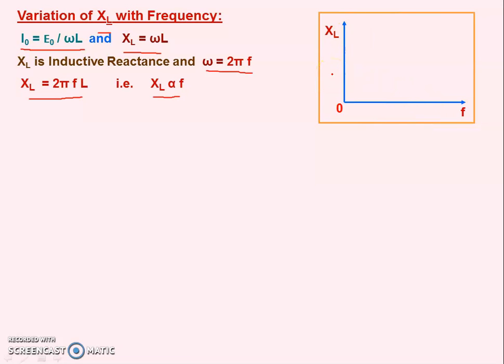The graph between XL and f should be a straight line, with f on the x-axis and XL on the y-axis. This is similar to Ohm's law graph where V is directly proportional to I - V on the y-axis, I on the x-axis gives a straight line, but not parallel to any axis. This is the variation of XL with frequency.